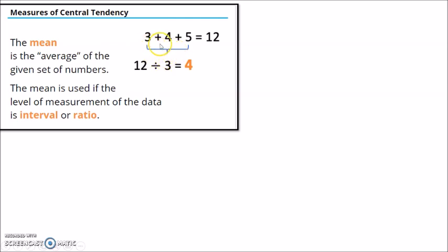So if we have three numbers, like 3, 4, 5, to get the mean, we add all of them and we divide them by 3. So that's 12 divided by 3, and so the average, or the mean, is 4.